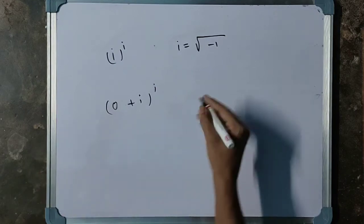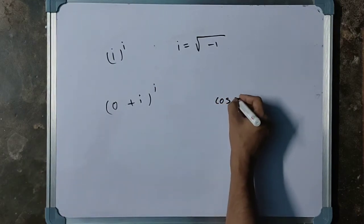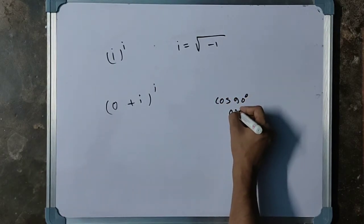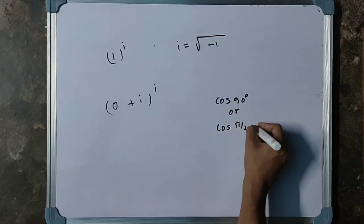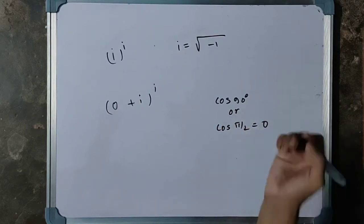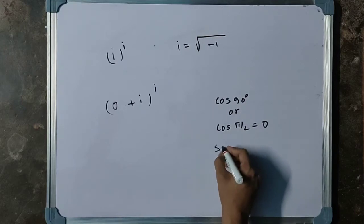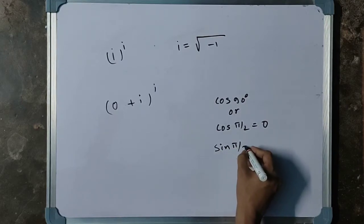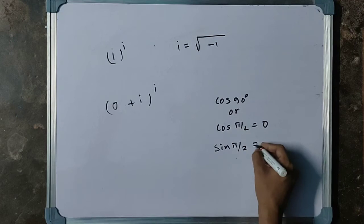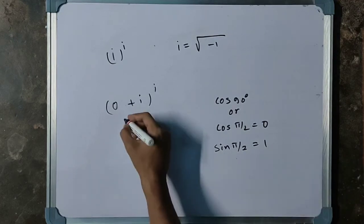Inside the bracket, we know that cos 90 degrees, or cos π/2, equals 0. Similarly, sin π/2 equals 1.